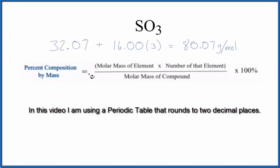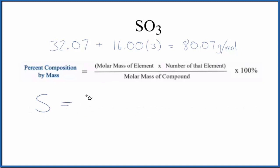Next, we can figure out the percent composition by mass of each element. Let's start with sulfur. Sulfur on the periodic table is 32.07 grams per mole. We multiply that by the number of the element. We only have one sulfur.